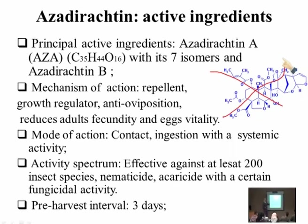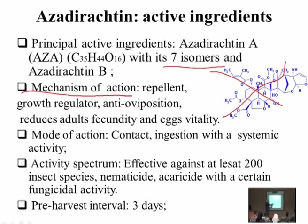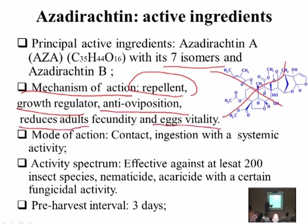The active ingredients are azadirachtin A and azadirachtin B with seven isomers. Isomers are compounds with the same molecular formula but different structural arrangements — cis and trans configurations. By changing the location of functional groups, new isomers are formed. Research found seven isomers that are highly effective against insects.